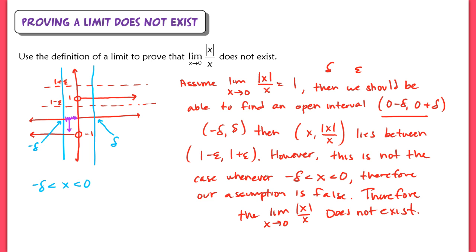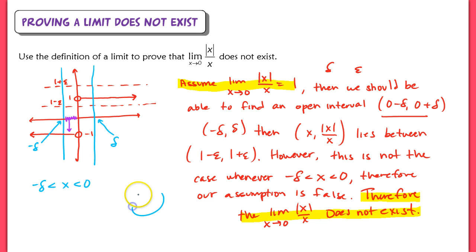That is the basic idea of an indirect proof. We started with an assumption we believed not to be true — that a limit exists. By showing through a contradiction that it's false, we conclude our assumption is incorrect, thereby establishing the original statement as true. We'll get practice with these types of problems, proving that limits exist or do not exist.